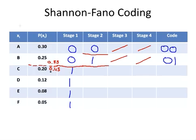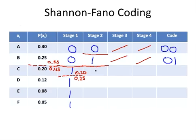Below the main partition, we have to split C, D, E, and F into two equal groups. Everything above this partition is 0.20, and everything below it is 0.25. If you try a few different combinations, you'll find that's as close as you can get to equal probability between the two subgroups. Everything above this partition gets a 0, everything below it gets a 1. C is now finished — it is coded as 1 and 0.